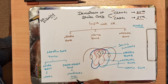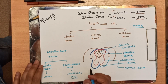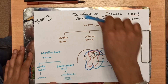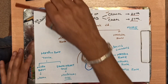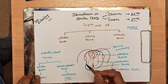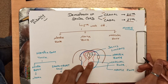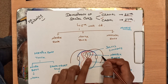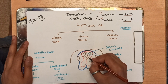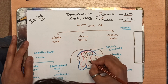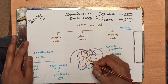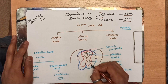Spongioblast cells will develop into the neuroglial cells, which are also called the supportive system of the nervous system. Now let me tell you how the gray matter and white matter of the spinal cord is formed. In the mantle region, here are the cell bodies of the neurons — this is the cell body — and the axons of these neurons enter into the marginal zone.